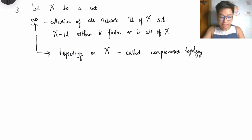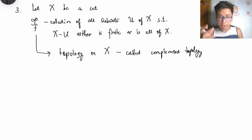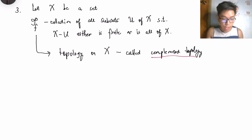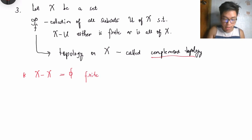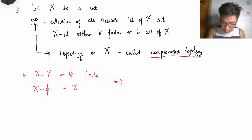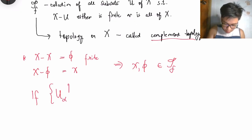Let X be a set and let tau sub f be the collection of all subsets U of X such that X minus U is either finite or all of X. This is actually a topology on X called the finite complement topology. To show why: observe that X minus X is empty (which is finite), and X minus empty set equals X (which is all of X). So both X and the empty set are in tau sub f.